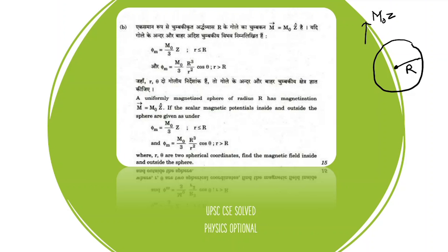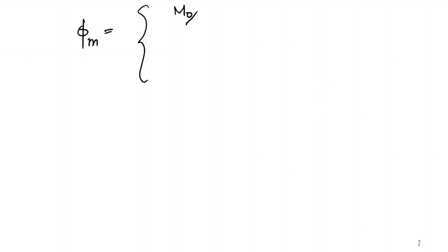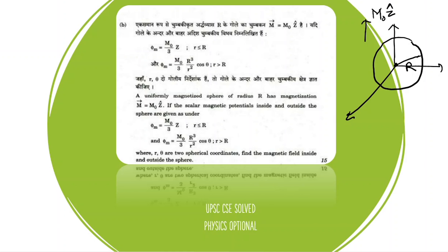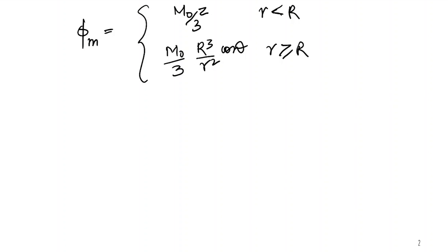Hello everyone. In today's session we will be doing one of the previous year questions. We are given a uniformly magnetized sphere of radius R with magnetization in the Z direction. We are given the scalar magnetic potentials: M₀/3 · z when r is less than R, and M₀/3 · R³/r² · cosθ when r is greater than or equal to R. Here r and θ are spherical coordinates.